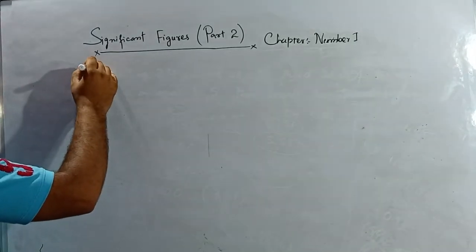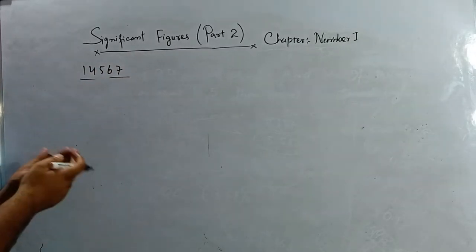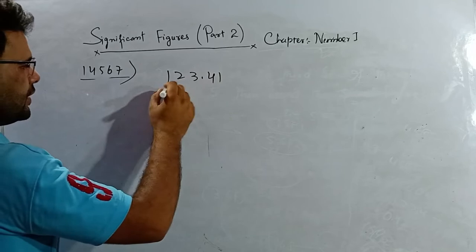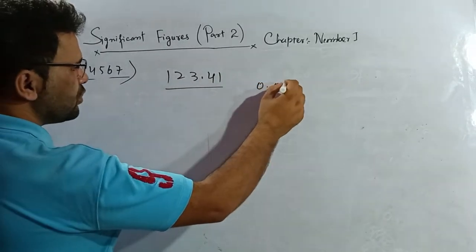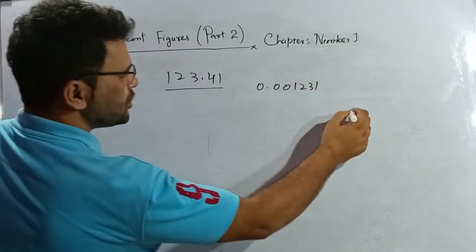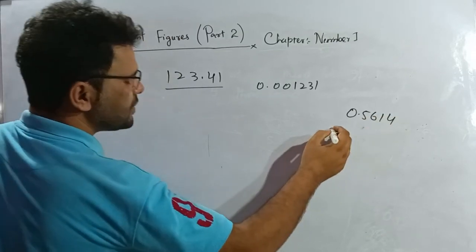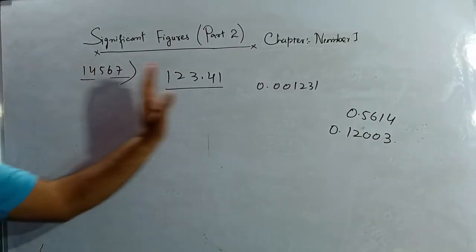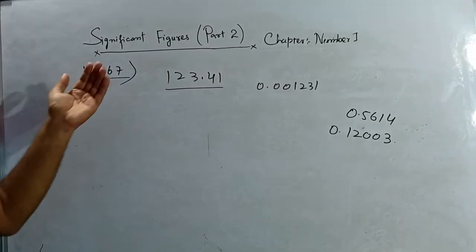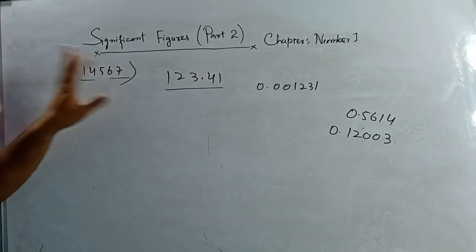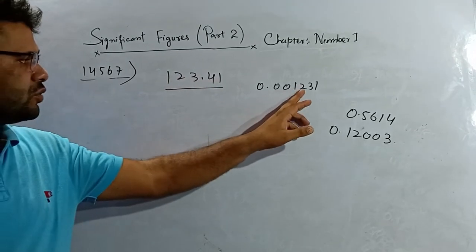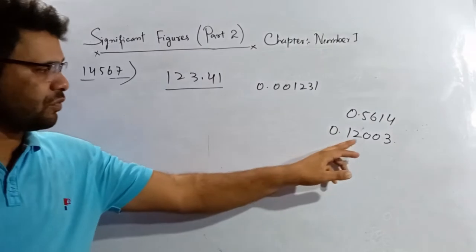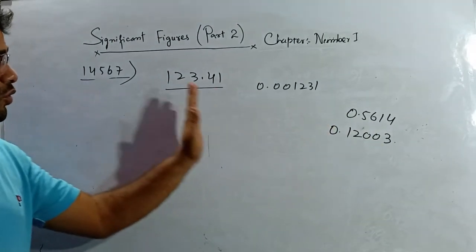Now you can see there are different types of numbers: ordinary numbers without a decimal like 14567, decimal numbers like 123.41, and numbers like 0.00123, 0.5614, and 0.12003. For these, always first count the number of significant figures in the number. For 14567 there are five SF; for 0.00123 there are three SF because leading zeros are not counted.